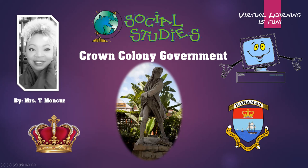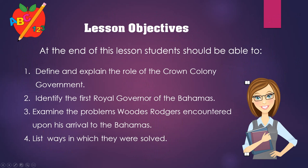At the end of this lesson, students should be able to define and explain the role of the Crown Colony Government, identify the first royal governor of the Bahamas, examine the problems Woods Rogers encountered upon his arrival to the Bahamas, and list ways in which they were solved. Hope you're ready?